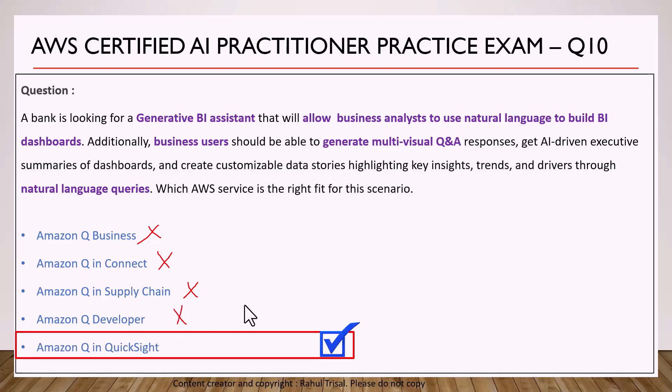Finally, Amazon Q in QuickSight is the right option. Amazon Q in QuickSight can be used to generate BI dashboards based on natural language queries by either business users or business analysts. From the exam perspective, you should be clear on all five Amazon Q variants and which one would be used in what scenario. That's it for this lecture — thank you.